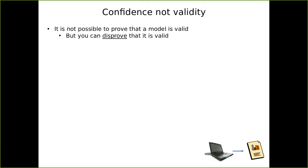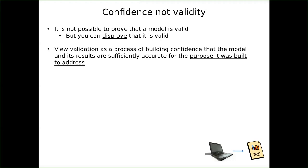It's important to change our thinking about this as well. One fundamental thing to remember is it's not possible to prove that a model is valid, but you can disprove that it is. You can demonstrate that this is not a valid model because this is wrong. The way to think about validation is as a process of trying to build confidence that the thing you've built is good enough for the purpose for which it was built — does it sufficiently address the question and capture the aspects of the system, albeit in a simplified way, in order to gain insight and make decisions?